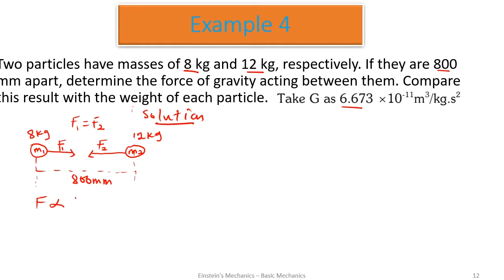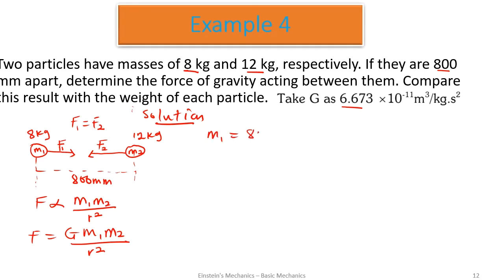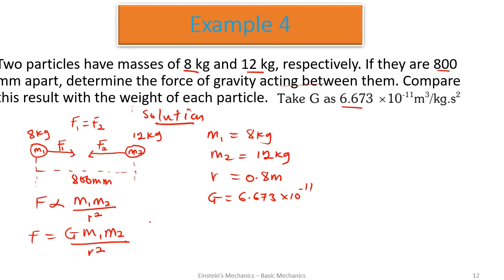The force is proportional to the product of the masses and inversely proportional to the square of the distance between the particles. Bringing in the gravitational constant G, the formula is F equals G times m1 times m2 divided by r squared. Our parameters: m1 equals 8 kg, m2 equals 12 kg, distance r equals 800 millimeters, converting to meters: r equals 0.8 meters. G equals 6.673 × 10⁻¹¹.